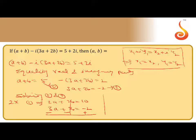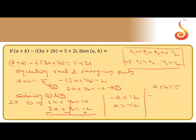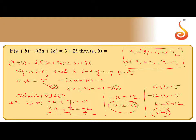Subtracting, that means minus a equal to 12, so a equal to minus 12. Calculating b using the first equation: a plus b equal to 5, and a is minus 12, so minus 12 plus b equal to 5, giving b equal to 5 plus 12, so b equal to 17.